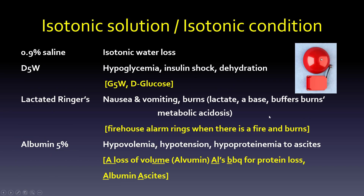For an isotonic condition, we use an isotonic solution. 0.9% saline can replace isotonic water loss. D5W can also help with hypoglycemia and insulin shock. I recommend thinking of it as G5W or D-glucose, since it's just one of the enantiomers — a mirror image of the glucose molecule. Lactated Ringer's is used for nausea and vomiting, burns, and metabolic acidosis, since lactate is a base that buffers.